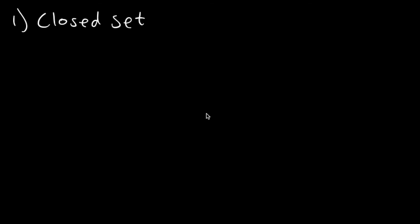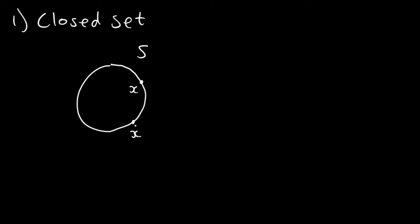One of the two requirements for a set to be compact is that the set has to be closed. What we mean by a closed set, very briefly, is that it includes its points on the boundary or its limit points. For example, if we draw a set — let's call it S — the set would be closed if it included its boundary points, like this point X here on the boundary of the set.